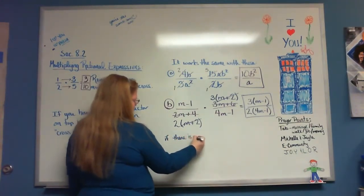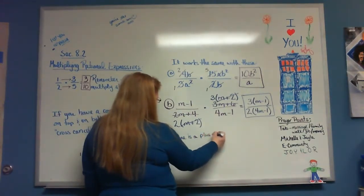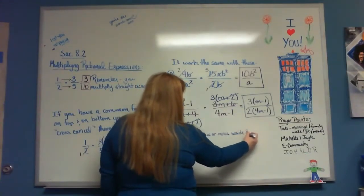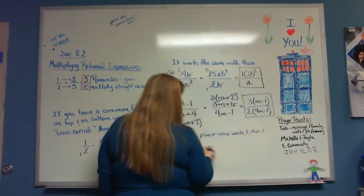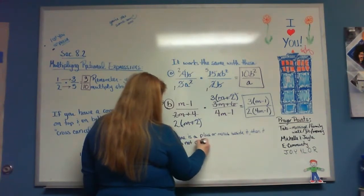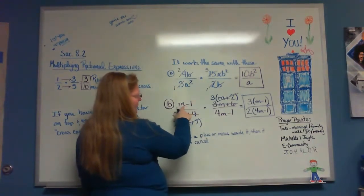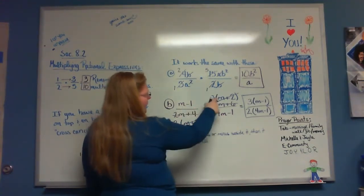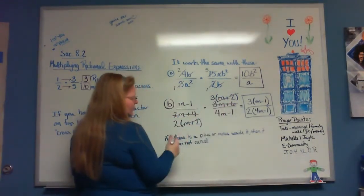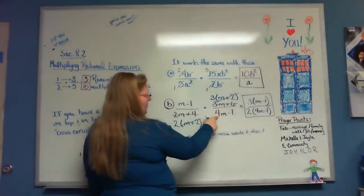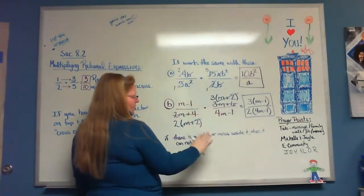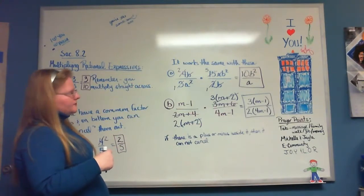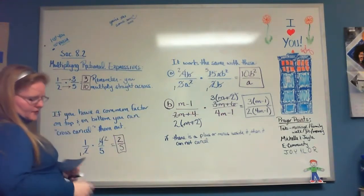Key rule: if there is a plus or minus beside a term, it cannot cancel. I can't cancel this M with that M because there's a minus beside it. I could cancel a whole expression with another whole identical expression in parentheses. When there's a plus or minus, it's not a standalone factor, and if it's not a factor then you can't cancel.